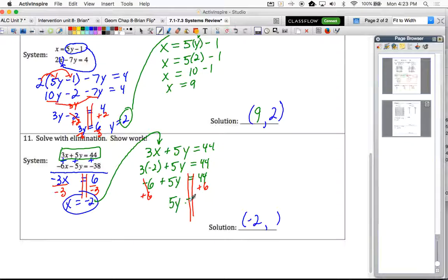Bring down what's left. 5y equals 50. And then our last step will be to undo multiplication. So we will divide both sides by 5. And now we get y is equal to 10. So our solution is the ordered pair negative 2, 10.